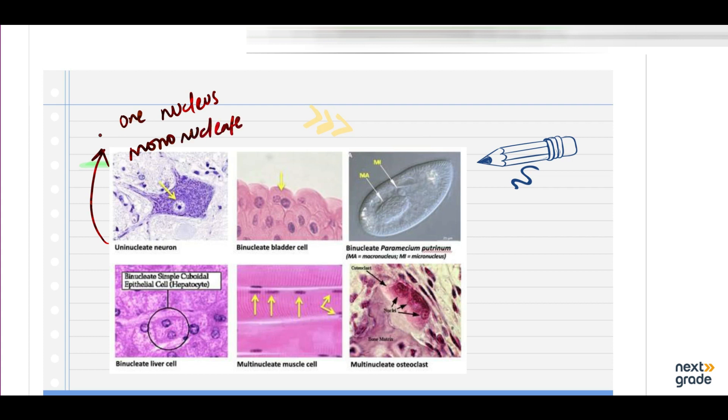And such cells where there are two nuclei we call binucleate. Here if you look at this picture, you have seen uninucleate neuron. Binucleate bladder cells, where there are two cells.